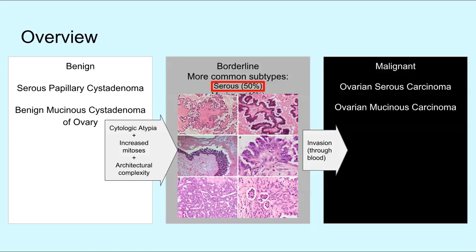As their name implies, borderline tumors fall in a gray zone between benign and malignant. There is some controversy about the malignant potential of BOTs. Although BOTs mostly act in a benign behavior, they can be associated with features of malignancy, like microinvasion and lymph node involvement.